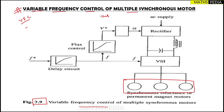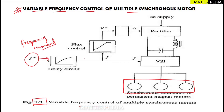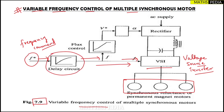Starting with the block diagram, f* is the frequency command. This frequency command f* is passed on to the delay circuit, and from there it reaches the VSI — voltage source inverter — which we have already discussed in detail.